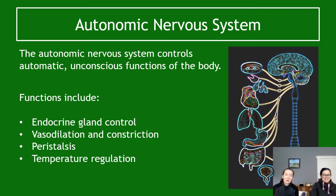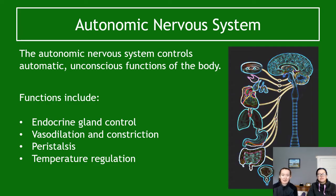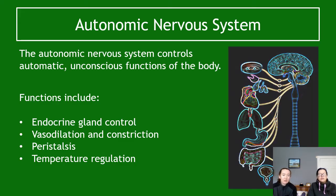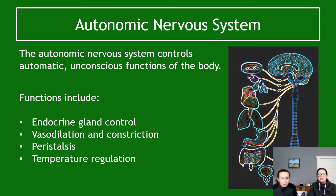The other branch of the peripheral nervous system is the autonomic nervous system. This controls automatic, unconscious functions — things your body does without you thinking about them. These include endocrine gland control, such as the pancreas releasing insulin; vasodilation and vasoconstriction; peristalsis — the process of food moving through your body; and temperature regulation. Breathing rate and heart rate should be included on this list as well.